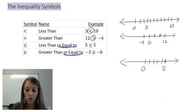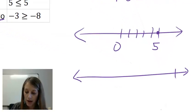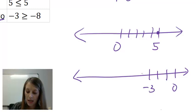Same thing with the greater than here, negative 3 is greater than or equal to negative 8. If I draw this up, I have 0, negative 1, 2, 3, and negative 4, 5, 6, 7, 8.